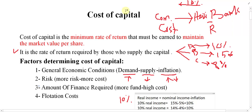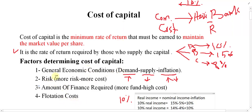In summary, cost of capital is the profit expected by those who supply capital — equity shareholders, preference shareholders, bondholders, banks, and so on. Several factors affect it: demand and supply, inflation, risk, amount of finance required, flotation cost, and many others such as political conditions, war, and market competition.